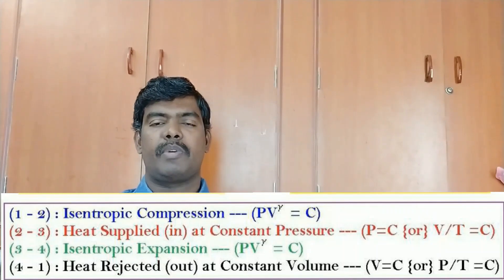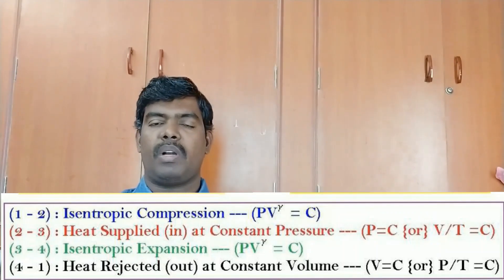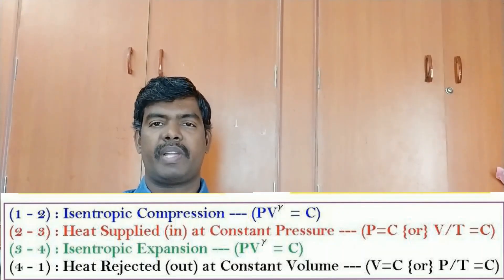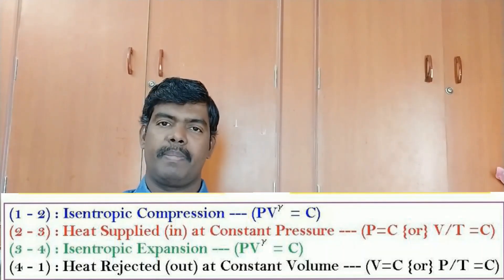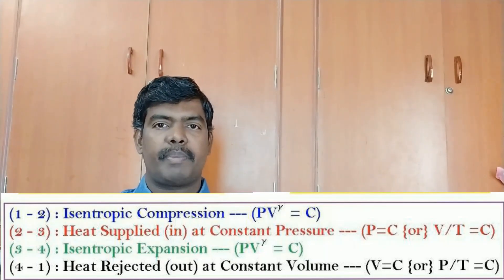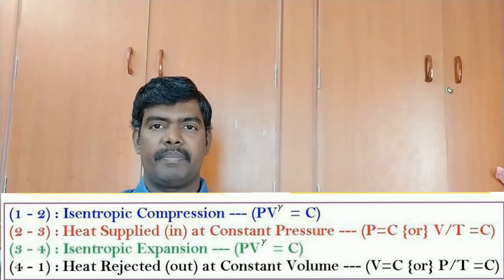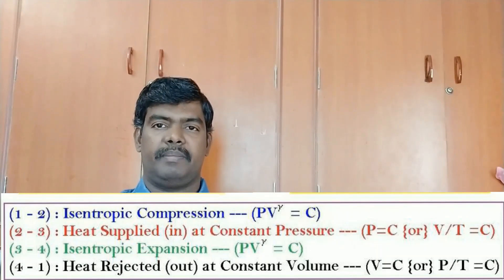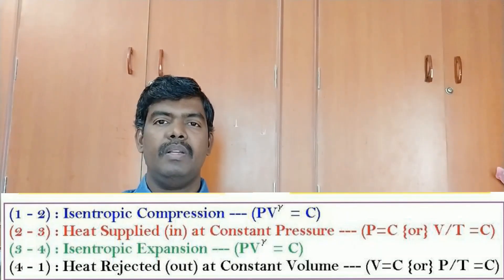The four thermodynamic processes in the Diesel cycle are: two isentropic processes — one isentropic compression and one isentropic expansion — one constant pressure process where heat is supplied, and one constant volume process where heat is rejected.